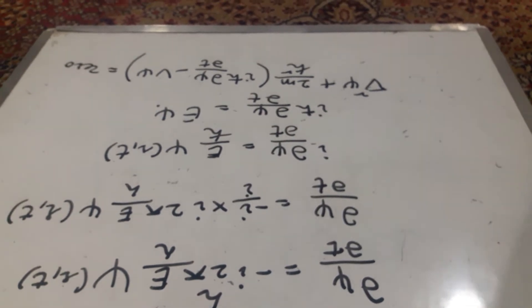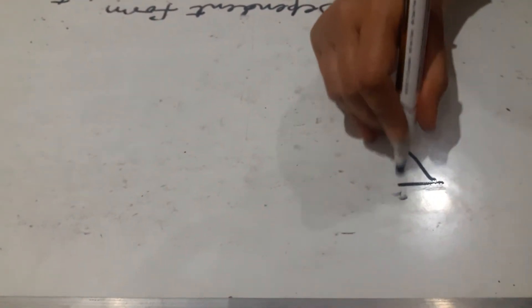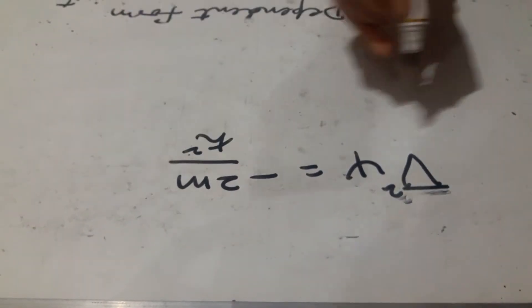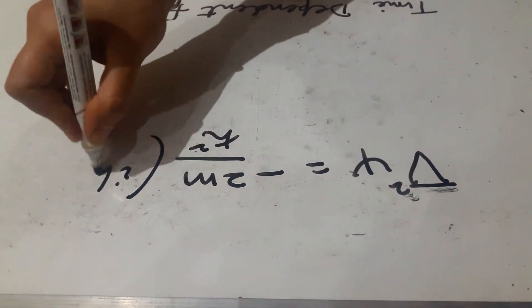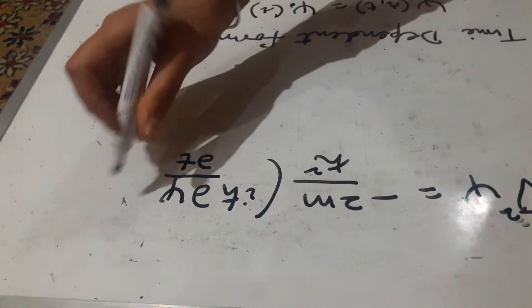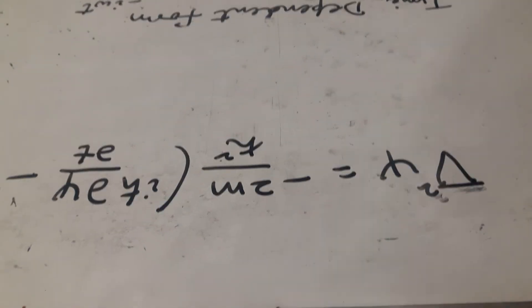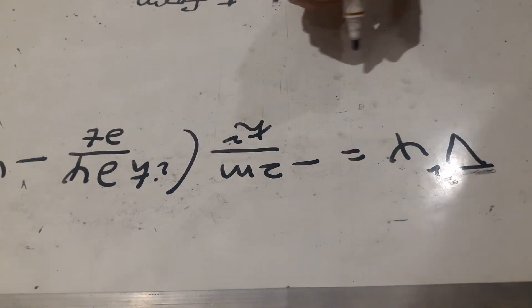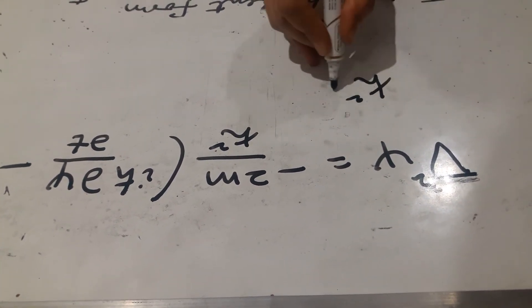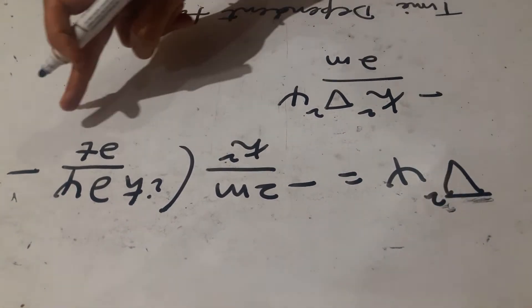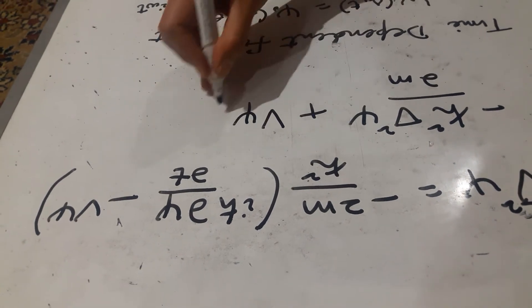If you are okay with that, then we will drop first few equations and write del square psi is equal to minus 2m by h cross square, i h cross dow psi by dow t minus v psi. I have taken this factor to the right side. Now we can write it this way: h cross square del square psi by 2m, and that too minus times, and then let us bring this v psi term on the left. It becomes plus.